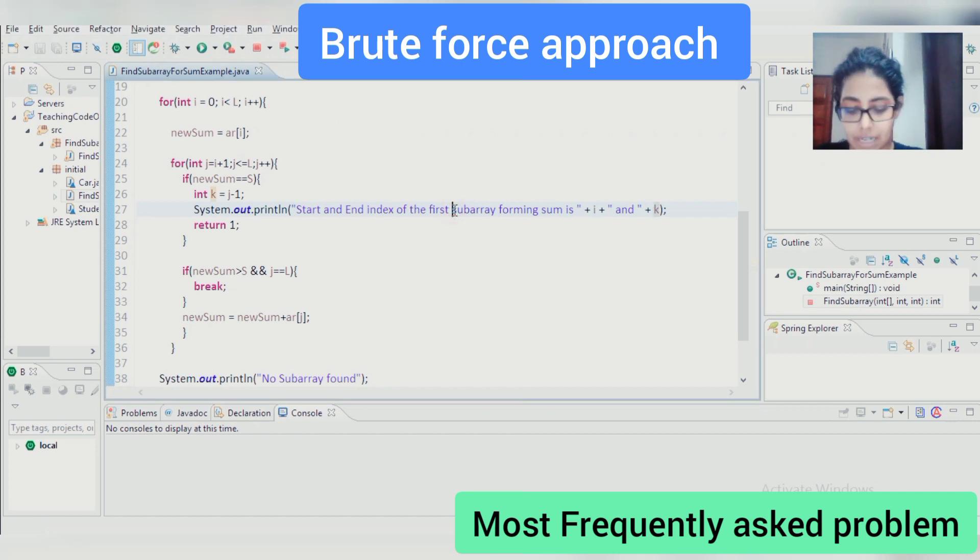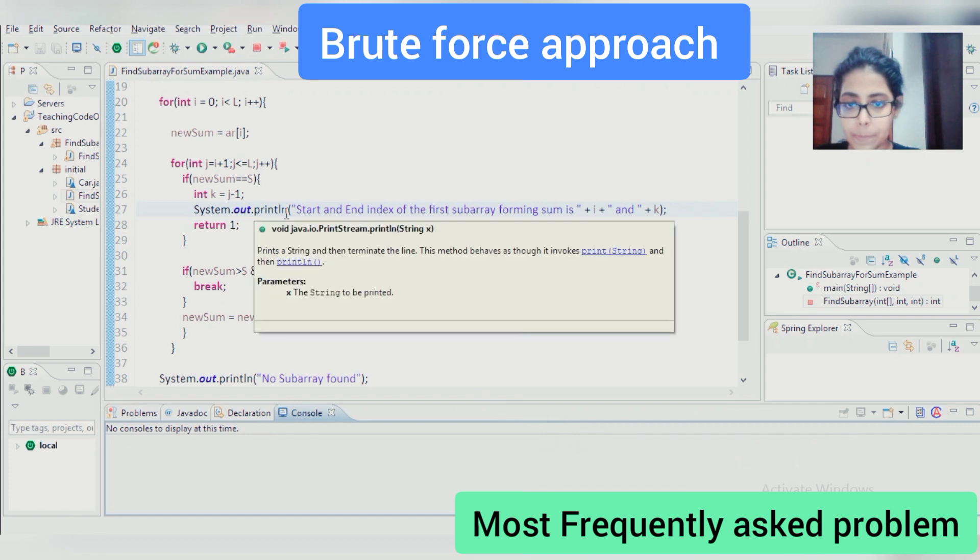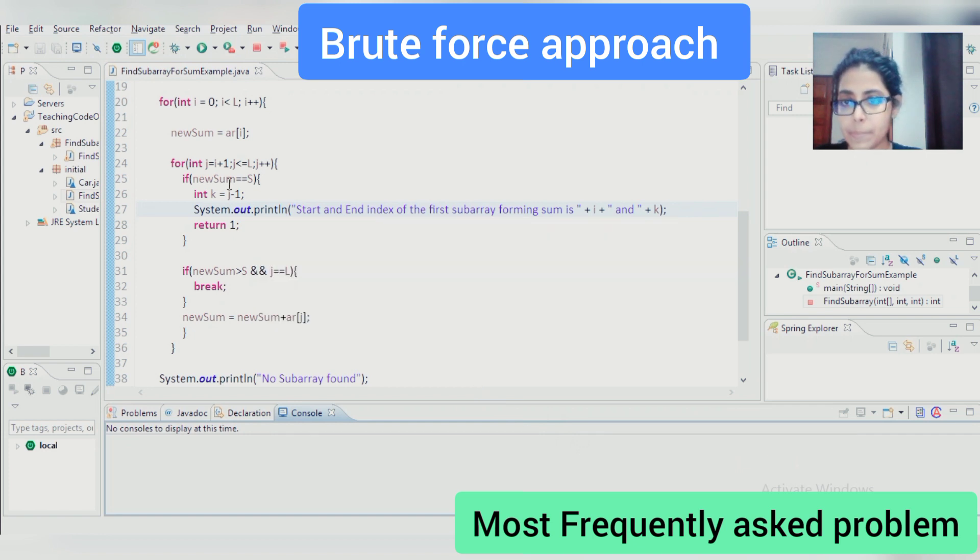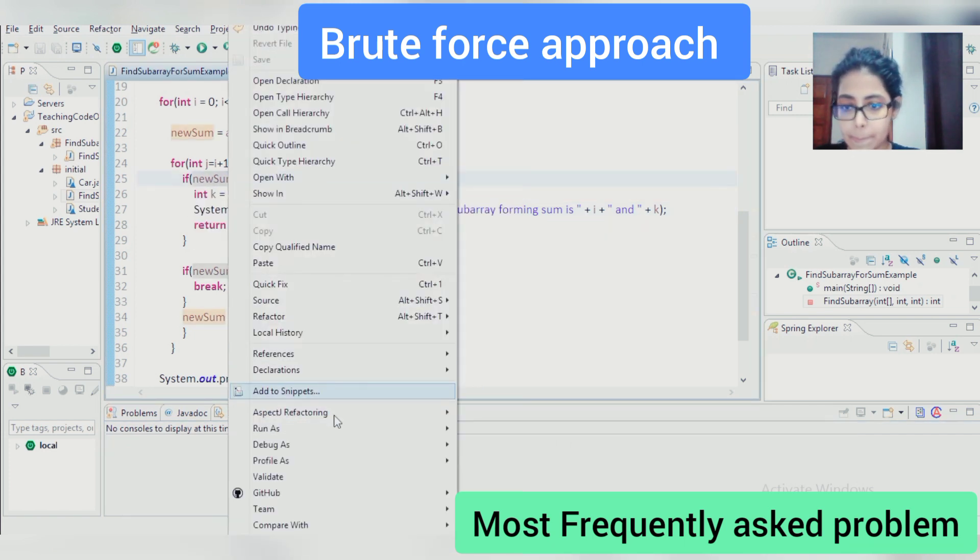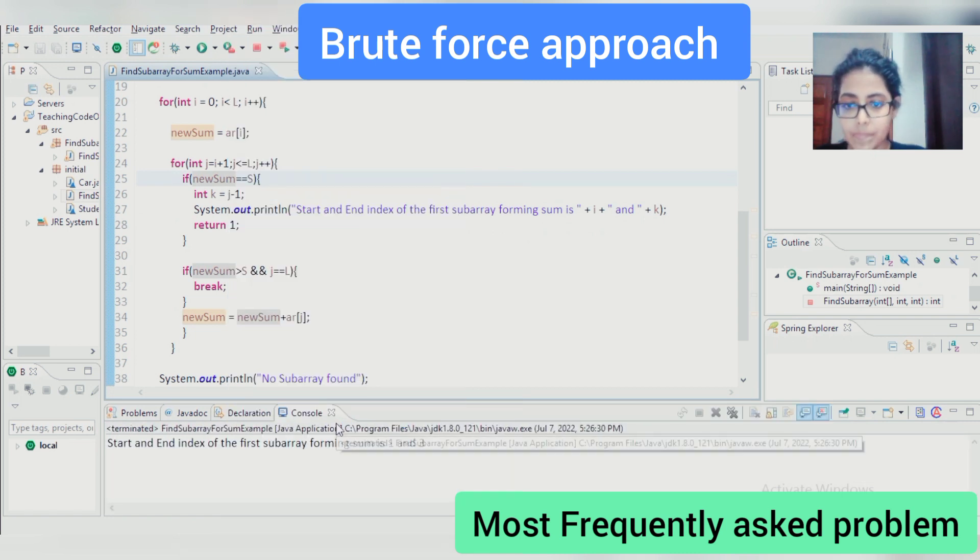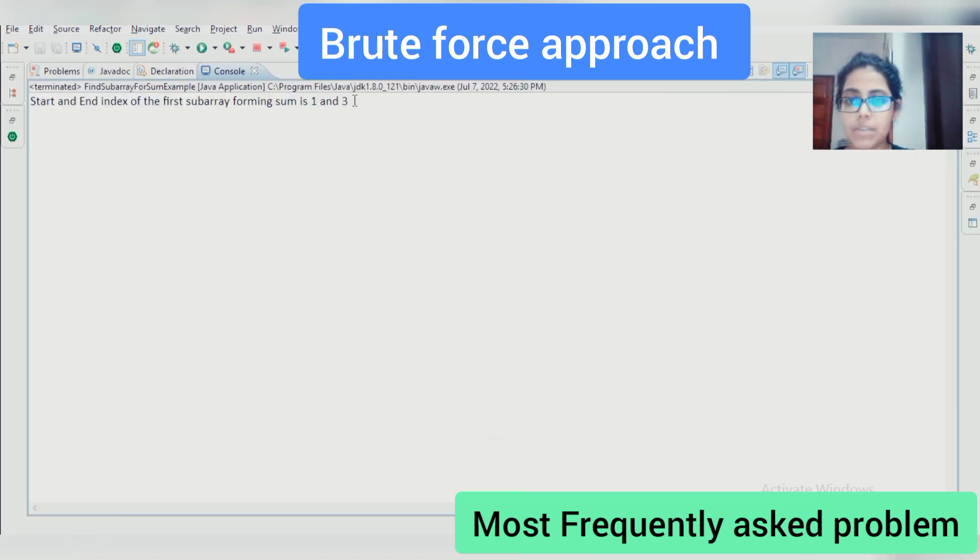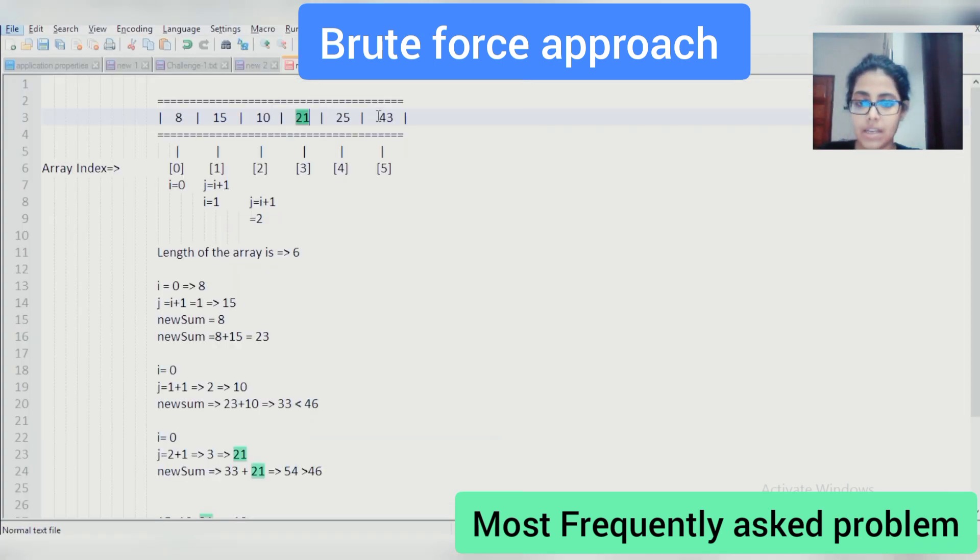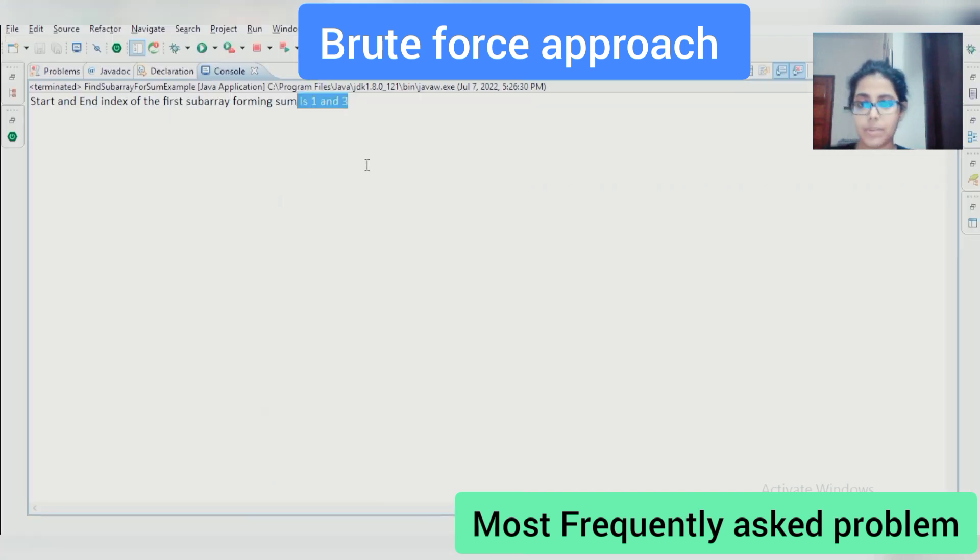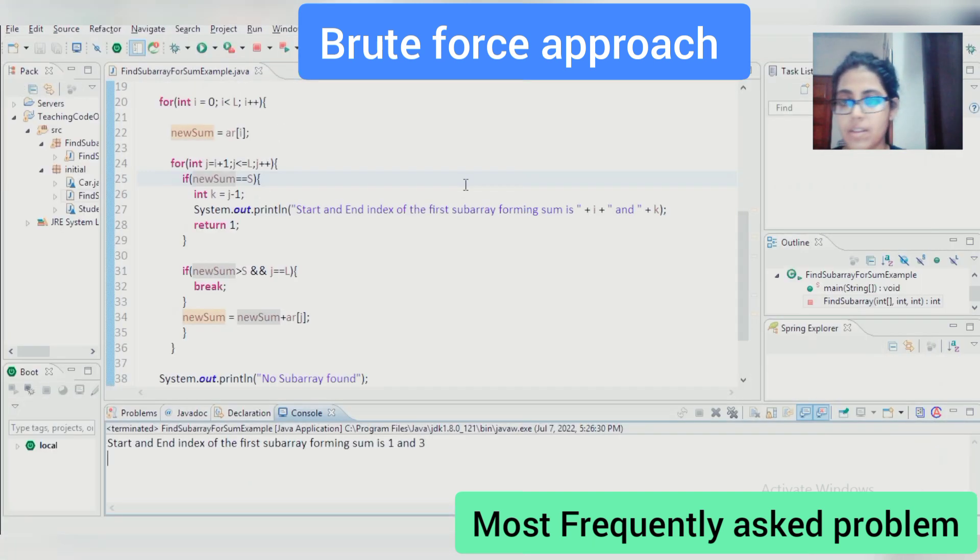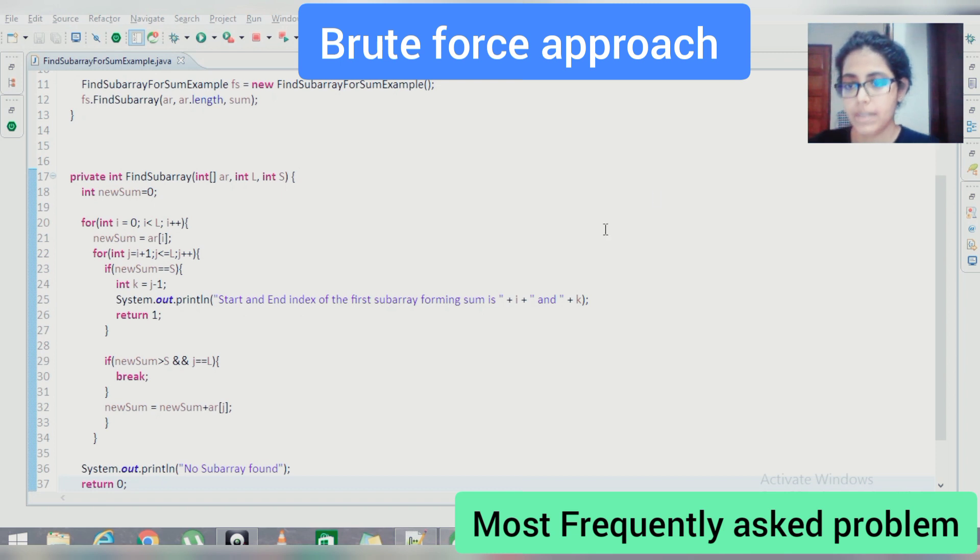If I run this one, see, start and end index of this subarray forming sum is 1 and 3. 15 is at 1st position, 21 is in the 3rd position.